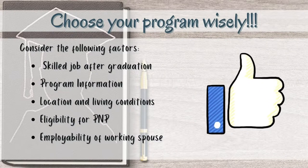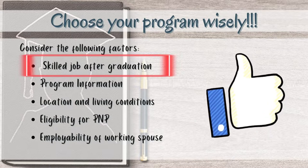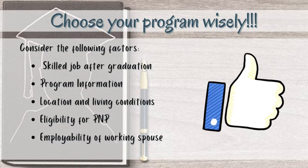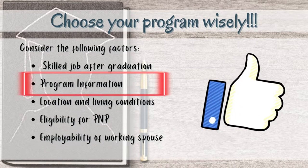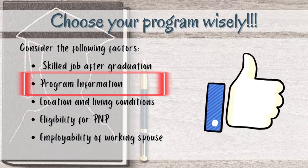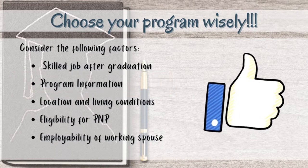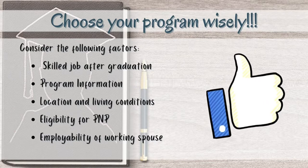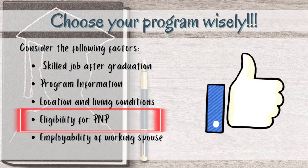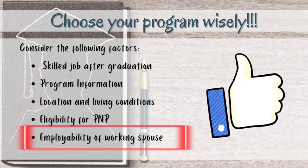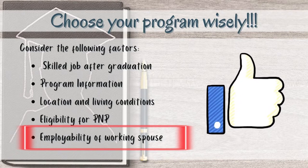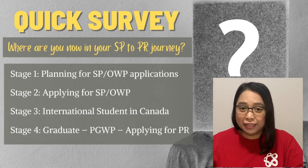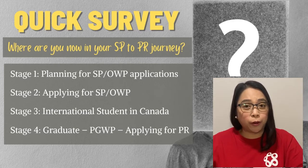So just to summarize our discussion for today: when choosing your program, make sure to note which skilled job you want to pursue in Canada and shortlist the programs that will land you that skilled job. Look closely at each program's information — the eligibility, availability, program length, cost, and employability of graduates. Also check the accessibility of the DLI location and the living conditions surrounding that school. Then do your research about the eligible PNP streams applicable to that program or skilled job. And finally, if the OWP holder is the main applicant in your Express Entry application, consider their employability first before deciding the international student's program. If you learned from this video, please give it a like and tell me in the comments which stage you are in right now in the student-to-PR pathway.